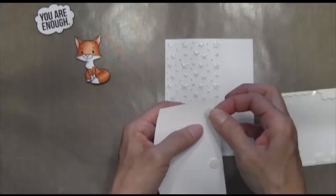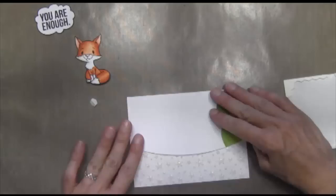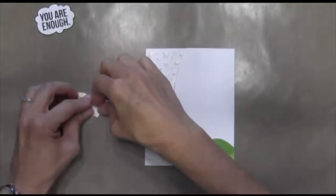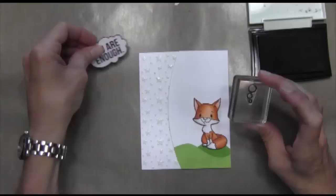Now I'm going to take my panel and use some dimensionals, just some foam adhesive by Stampin' Up, so it pops up on the card. Then I'm going to use the dimensionals also on my fox. I thought about adding some blue to the sky, but I just really like the way the fox with the bright orange-y colors looked against the white background. So I just left it white.